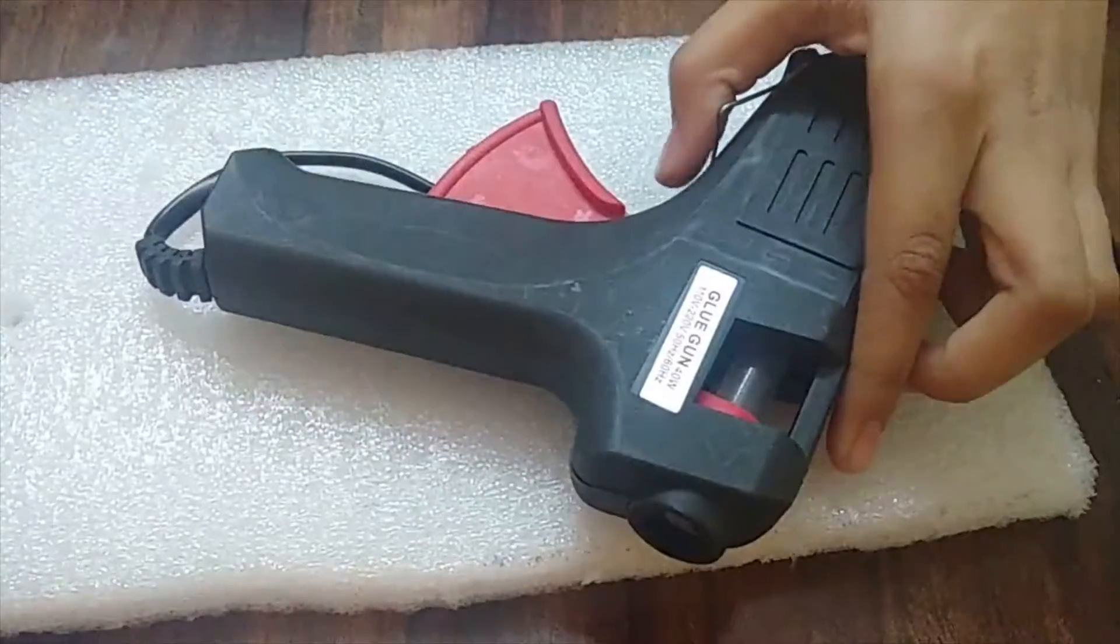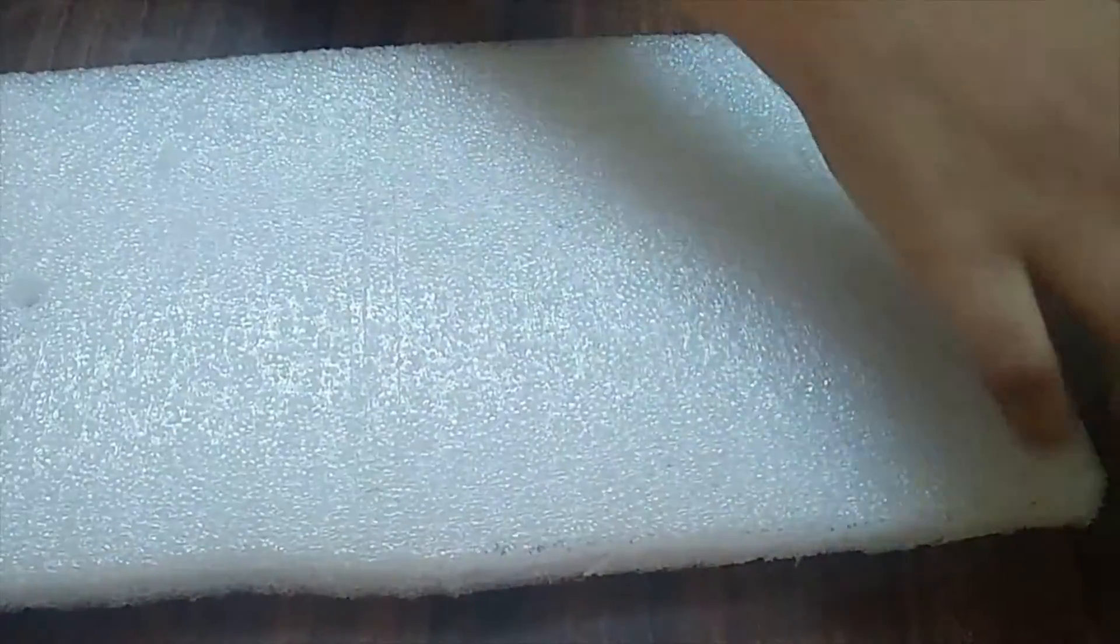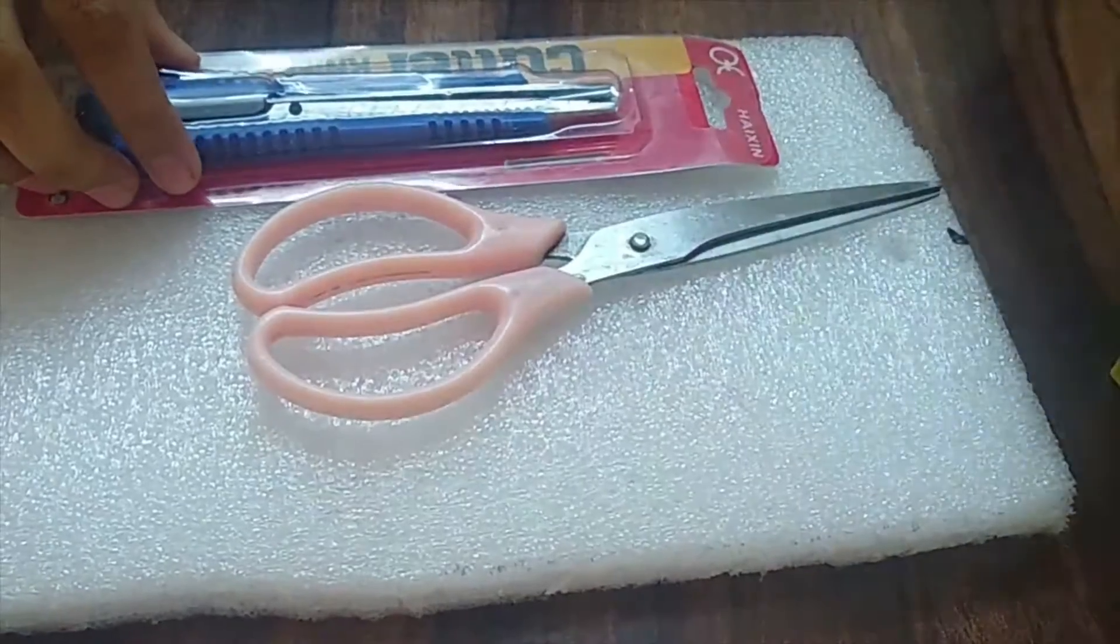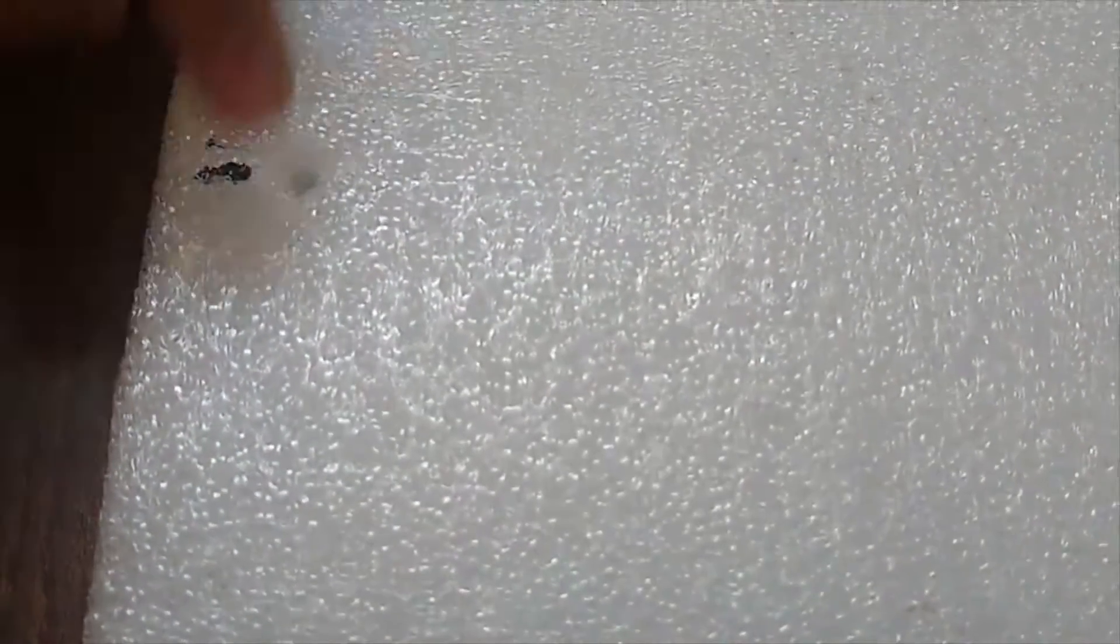A hot glue gun, wire cutter, scissor, and a double tip. First make two holes on each side for the pencil.